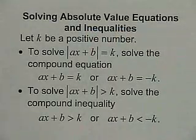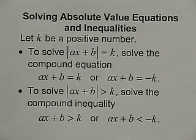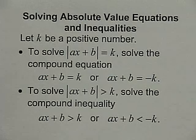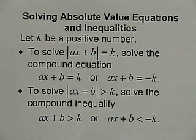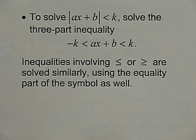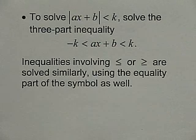Now that you've seen some of these properties of absolute values, we'll use them to solve equations and inequalities. Let k be a positive number. To solve the absolute value of ax plus b equals k, solve the compound equation ax plus b equals k or ax plus b equals negative k. To solve the absolute value of ax plus b greater than k, solve: ax plus b greater than k or ax plus b less than negative k. To solve the absolute value of ax plus b less than k, solve the three-part inequality: negative k less than ax plus b less than k. Inequalities involving less than or equal to or greater than or equal to are solved similarly.